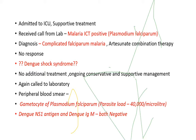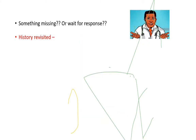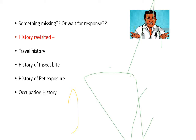With no response to treatment, the possibilities of dengue shock syndrome were considered, but that requires only conservative and supportive management. A further call to the laboratory reported a very high parasite load of falciparum and both dengue NS1 antigen and dengue IgM were negative. History was revisited — travel history, history of insect bite, pet exposure, and occupational history were taken.